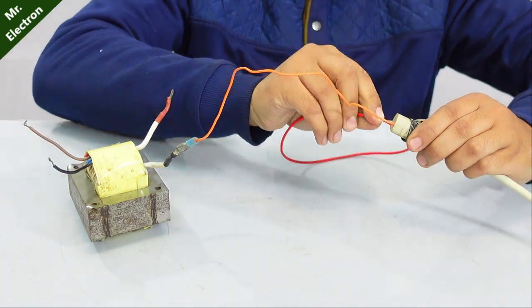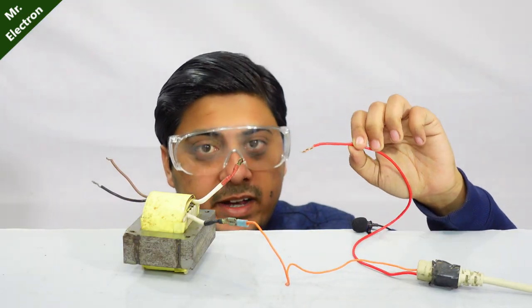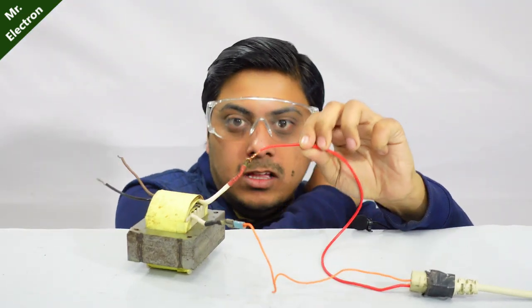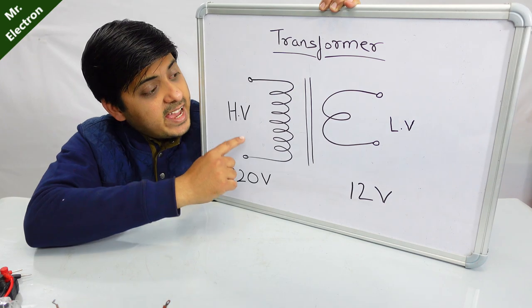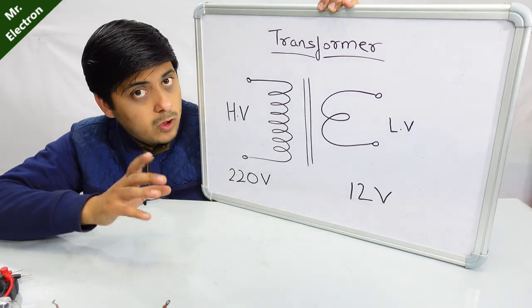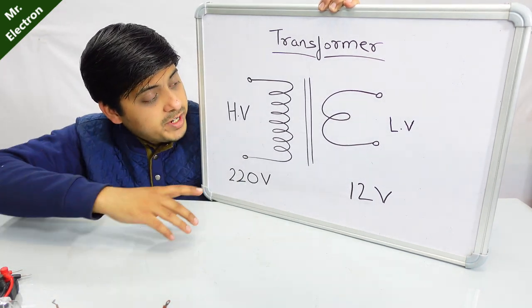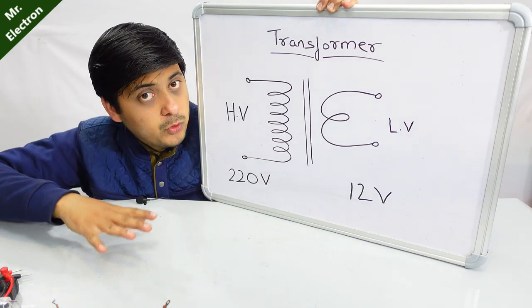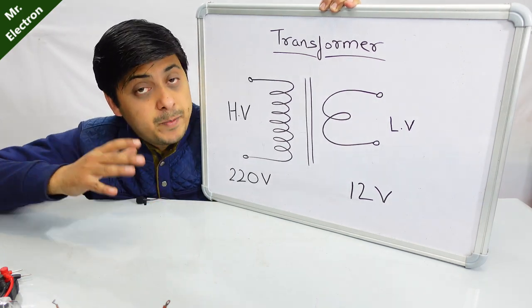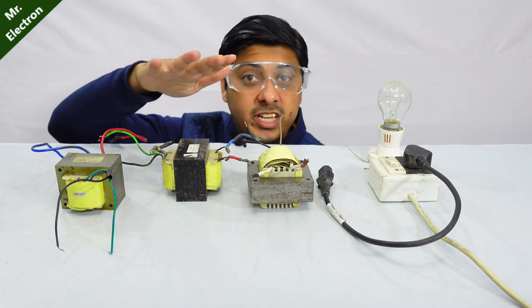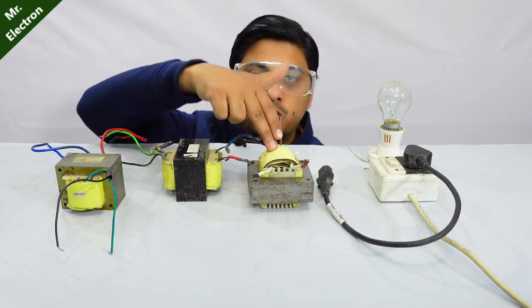Now simply connect this wire. A transformer has high voltage and low voltage sides. Always make sure that you know which one is high voltage and which one is low voltage before connecting it directly to the power supply. Here you can see our three UPS transformers.